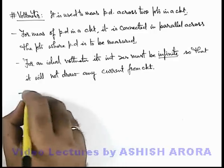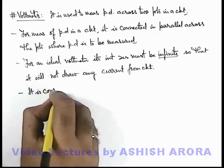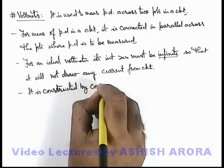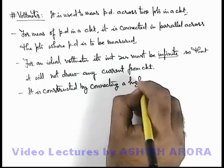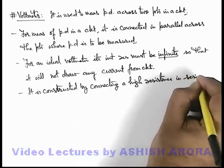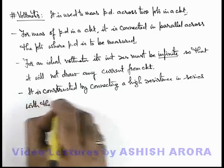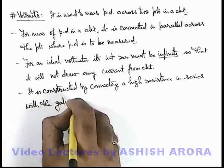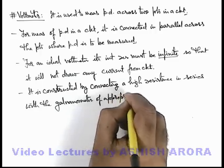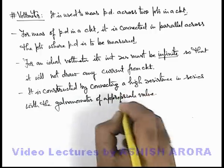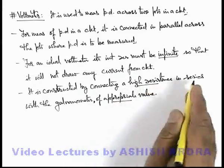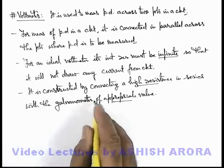About a voltmeter we can write that it is constructed by connecting a high resistance in series with the galvanometer of appropriate value. When an appropriate value high resistance is connected in series with the galvanometer, it can be used as a voltmeter.